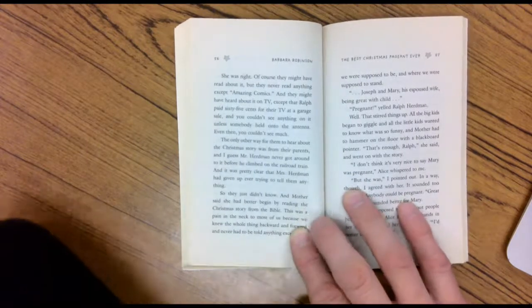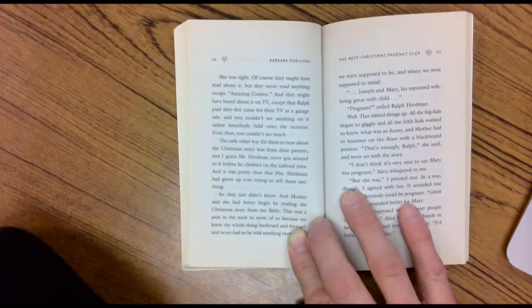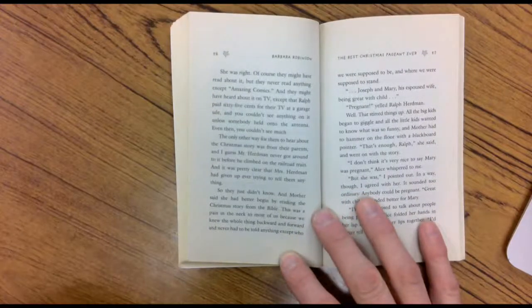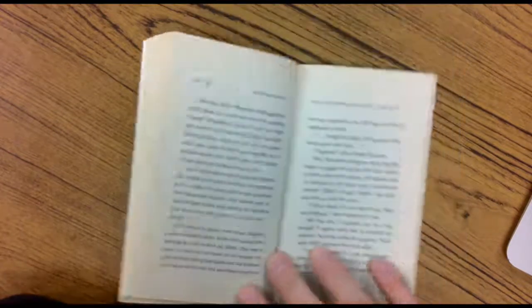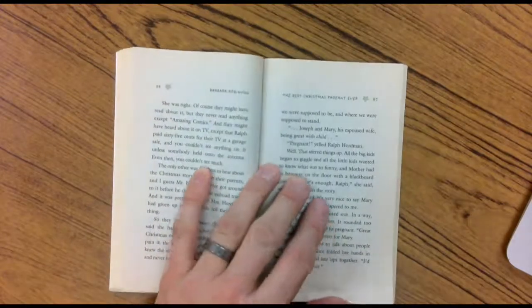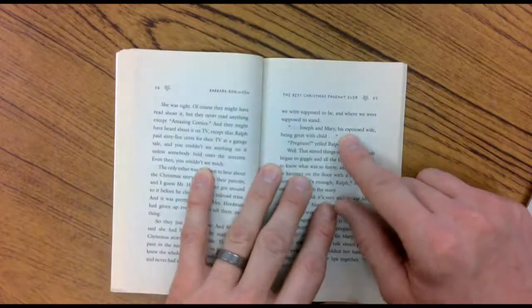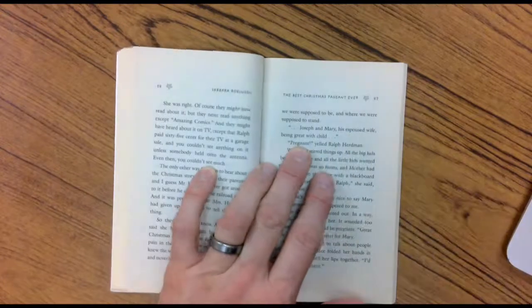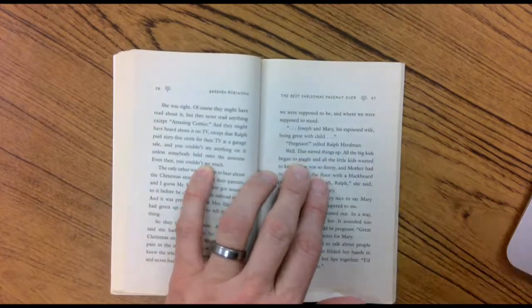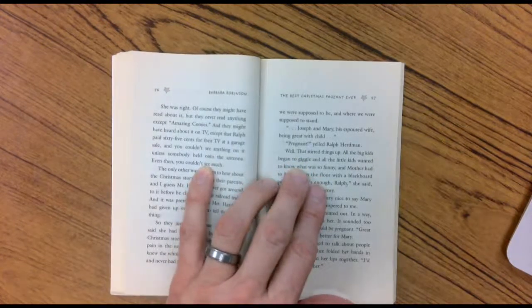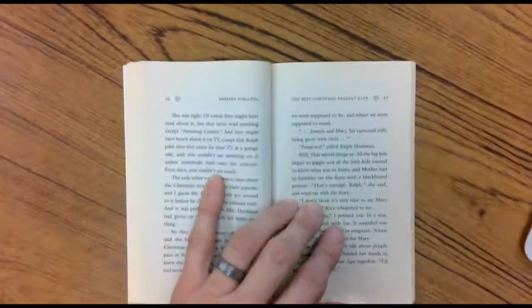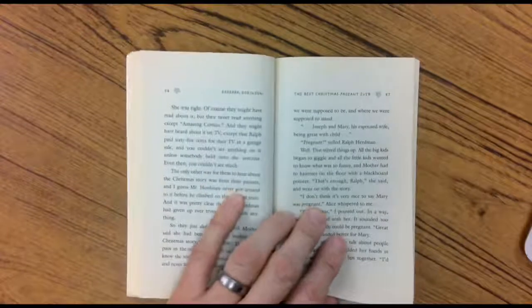And Mother said she had better begin by reading the Christmas story from the Bible. Now, if you don't know that this is located, it's located in a lot of the Gospels, but the Gospel of Luke is the one that you hear most often. This was a pain in the neck for most of us because we knew the whole thing backwards and forward and never had to be told anything except for who we were supposed to be and where we were supposed to stand. Joseph to marry his exposed wife, that means engaged or going to be his wife, being great with child. Pregnant, yelled Ralph Herman. Well, that stirred things up. All the big kids began to giggle and all the little kids wanted to know what was so funny. And Mother had to hammer on the floor with a blackboard pointer.